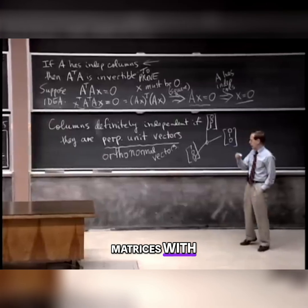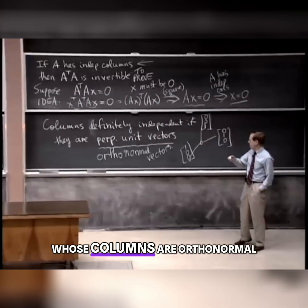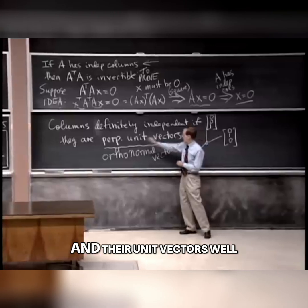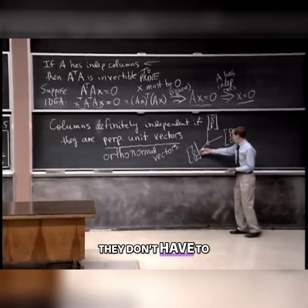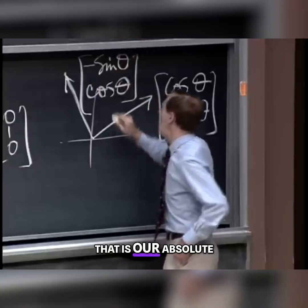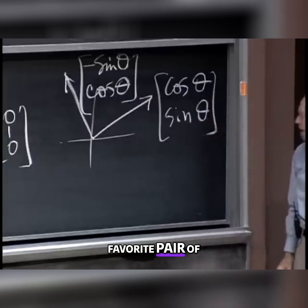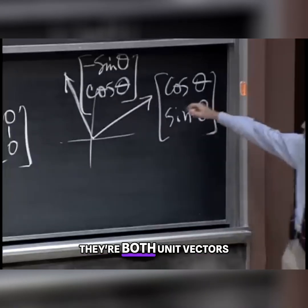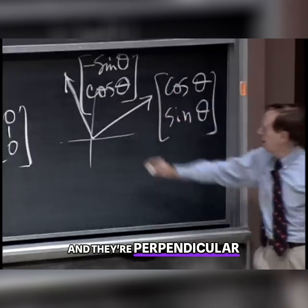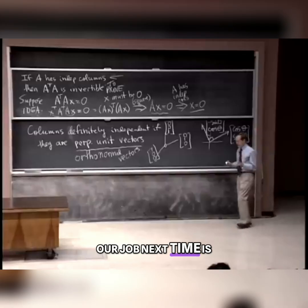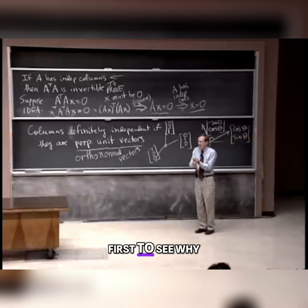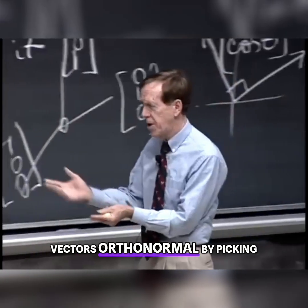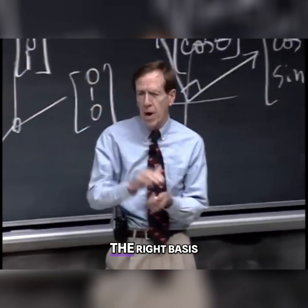Matrices whose columns are orthonormal — they're perpendicular to each other and they're unit vectors. That is our absolute favorite pair of orthonormal vectors. Our job next time is first to see why orthonormal vectors are great, and then to make vectors orthonormal by picking the right basis.